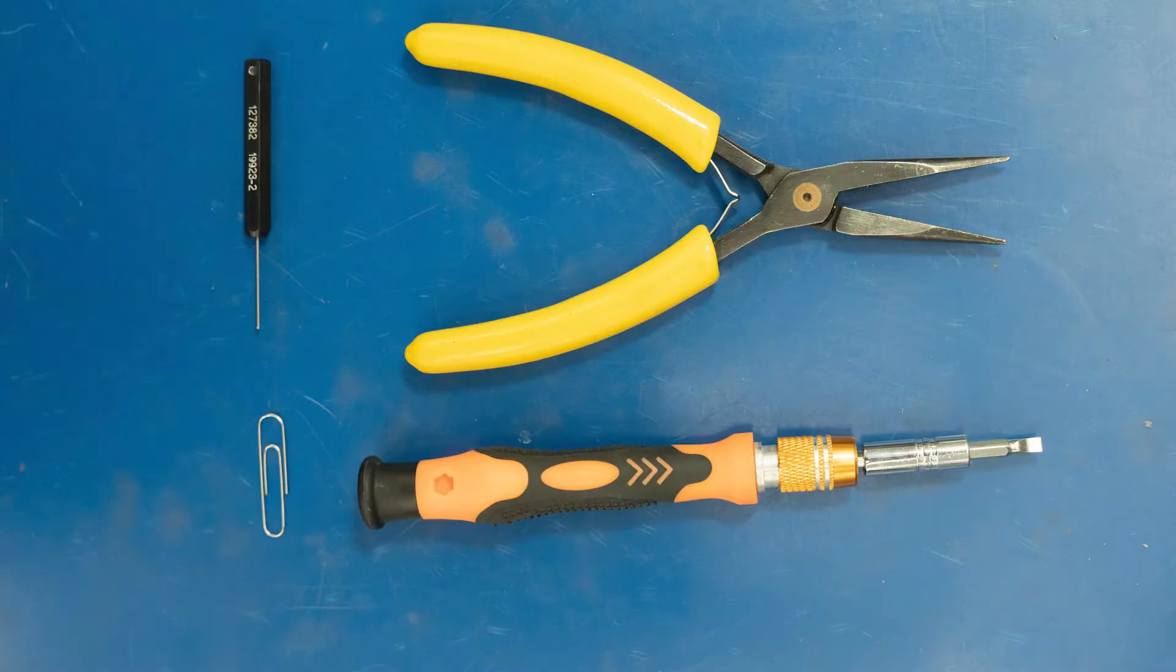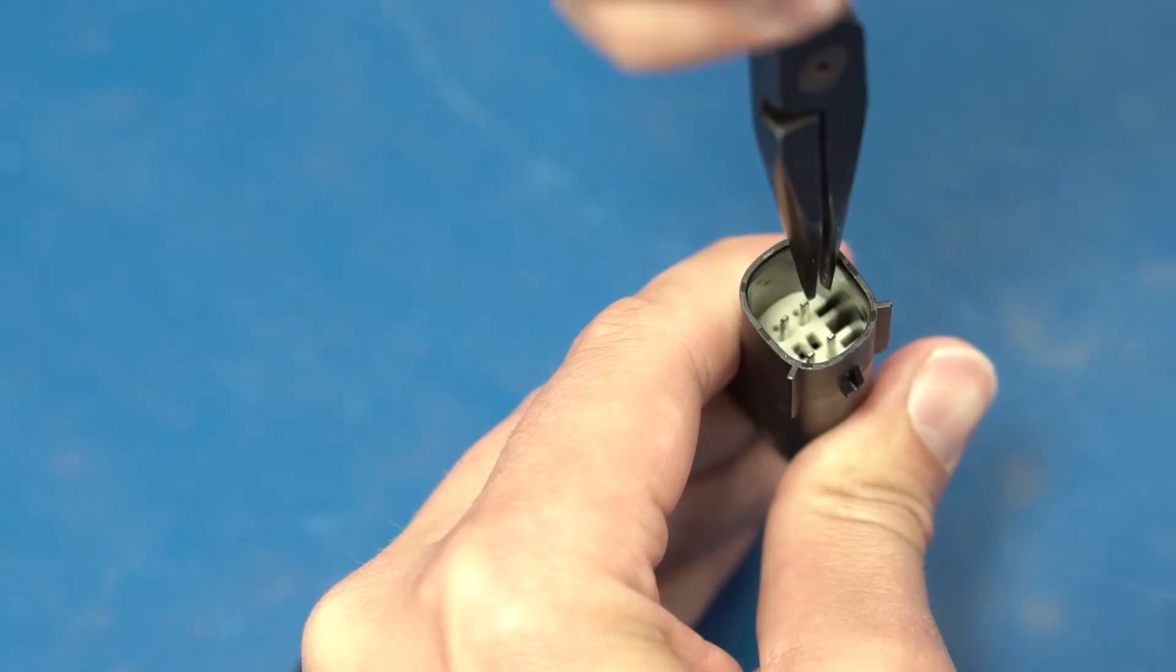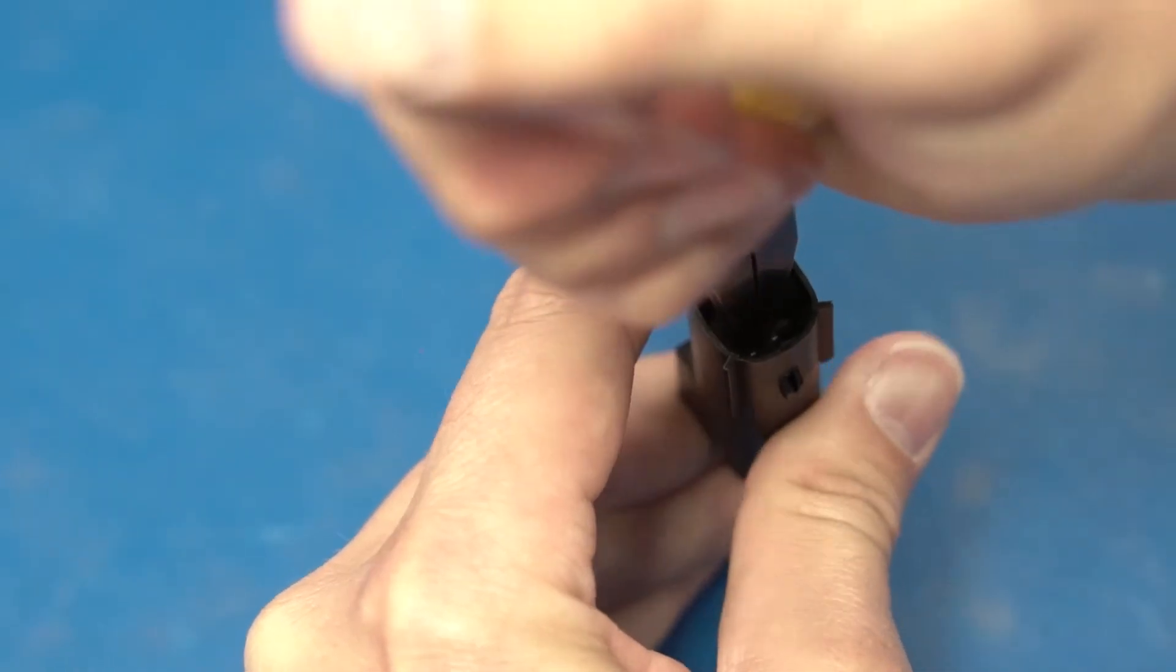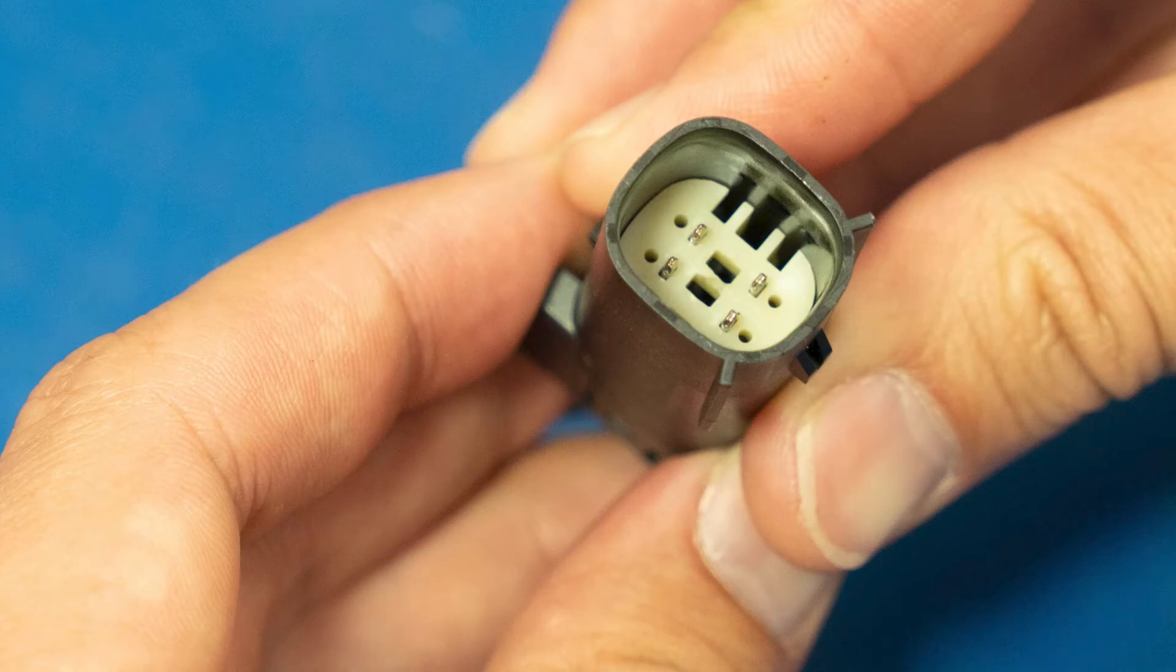The next section of this video is going to show how to remove a pin or socket. You will need the removal tool or a paper clip and also needle nose pliers and a flat head. Note the two rectangular shapes in the male connector. Use the needle nose to pull the body up and you'll hear a snapping sound. You can also see now that the pins are in the lower position.